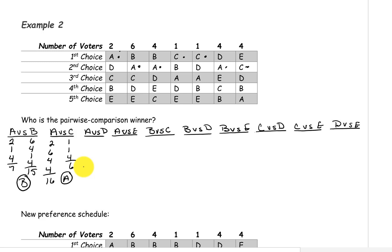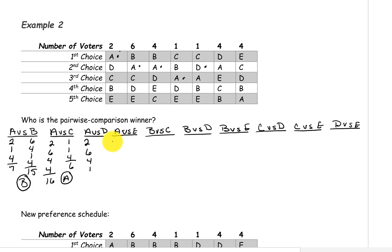Next, we'll compare A and D. A is above D on the first two, on the six, on the four, and on the next one. D is above A on the next one. D is above A on this four. And finally, D is above A on the last four. So A has a total of 13 and D has a total of nine, so A is the winner of this pairing.